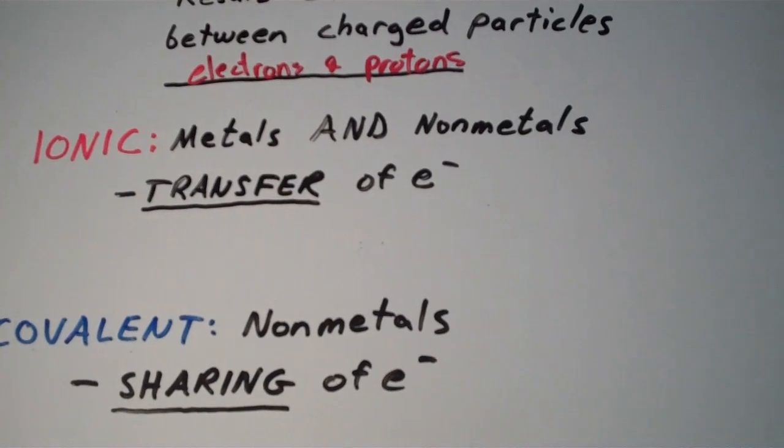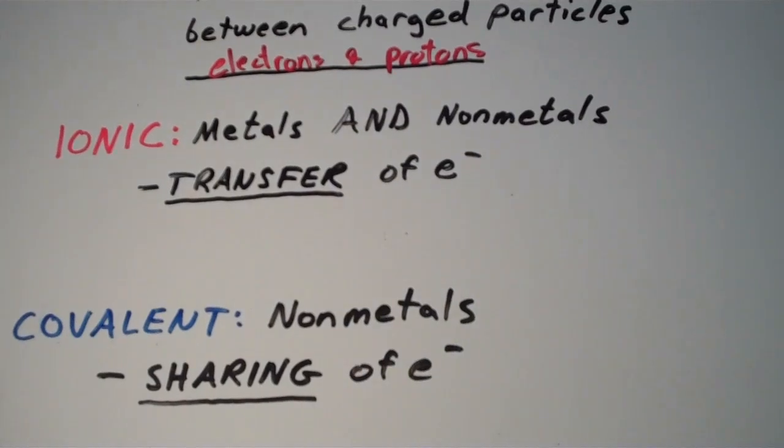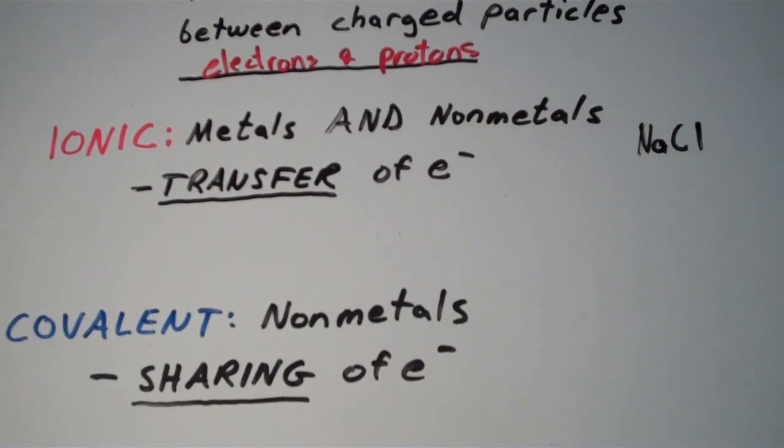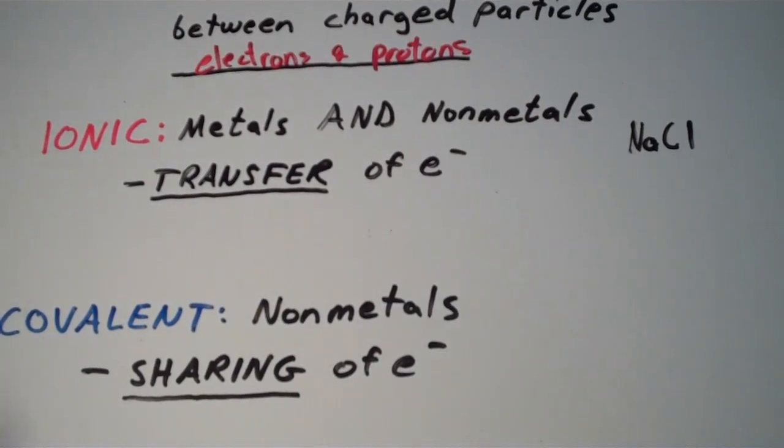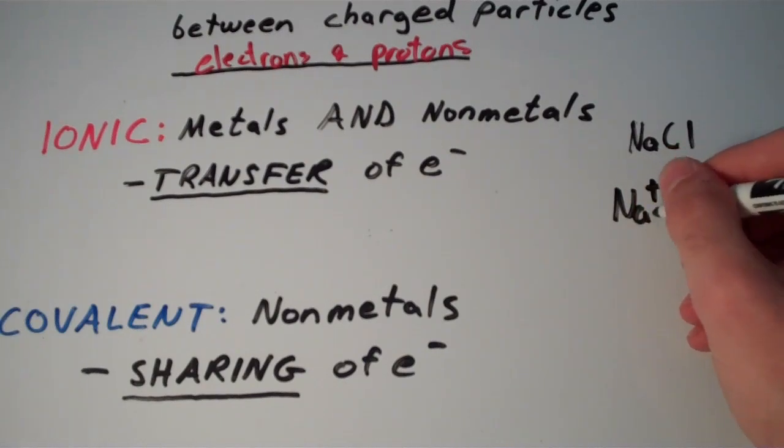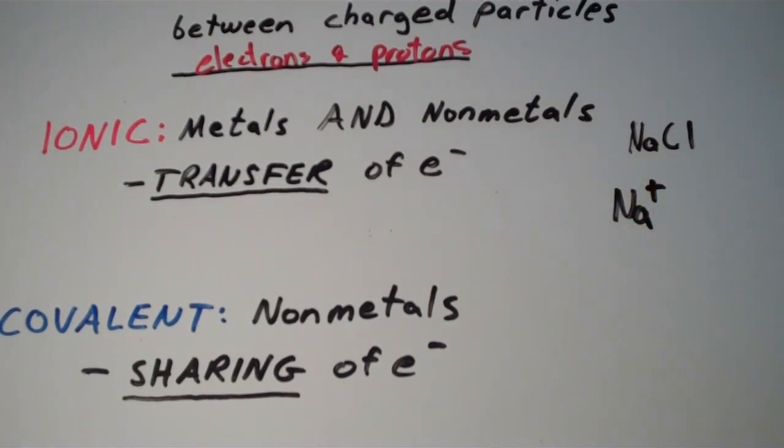So, in the ionic compound sodium chloride, we have a sodium plus ion, or just a sodium ion, that has lost an electron. And we have a chloride ion, which is a chlorine atom that has gained an electron.